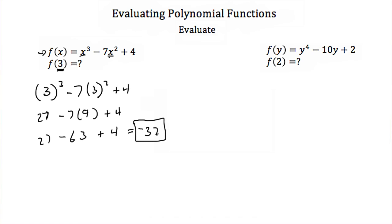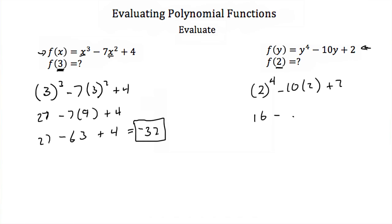Let's try this again. Here we have f(y) = y⁴ − 10y + 2, and we're asked to evaluate it for y = 2. We'll just plug 2 in for y: 2⁴ − 10(2) + 2. 2⁴ is 16, minus 10 times 2 is 20, plus 2. So this is going to be equal to negative 2.